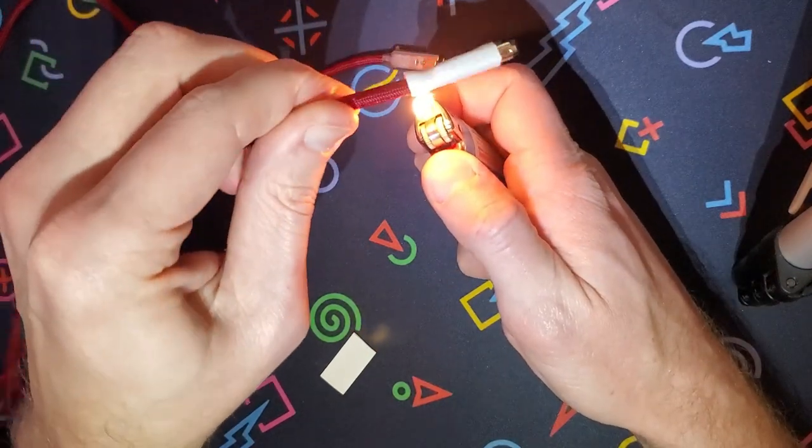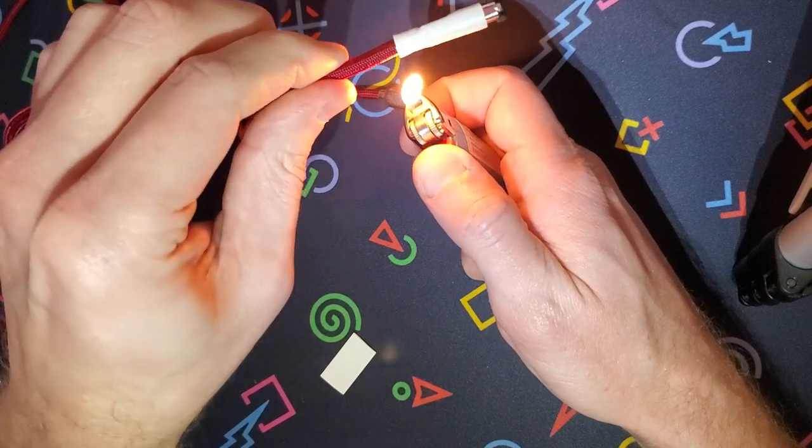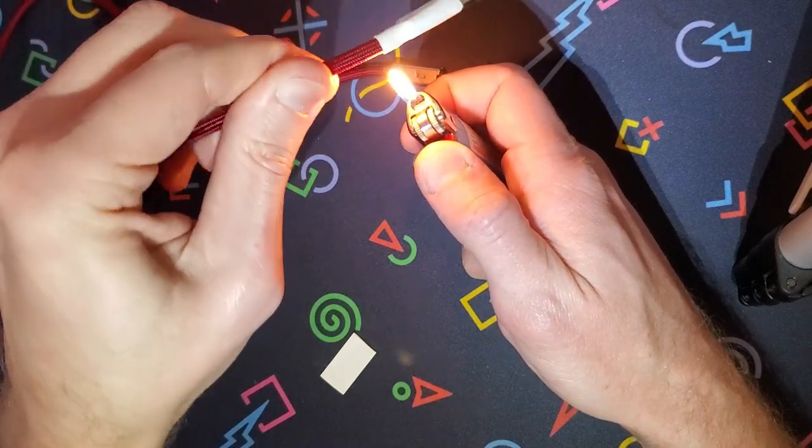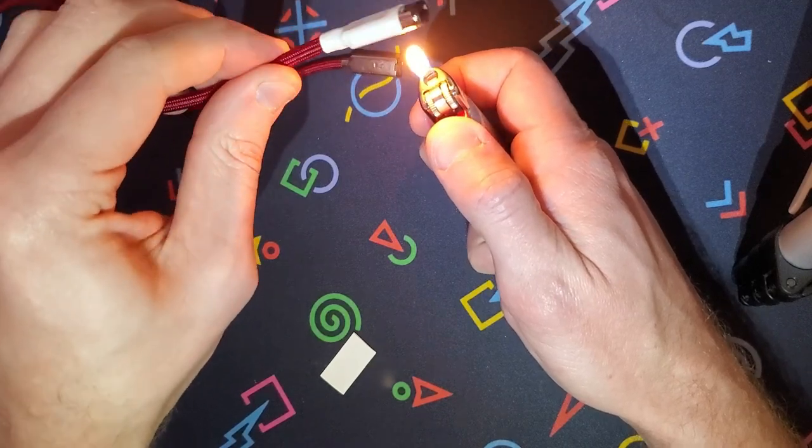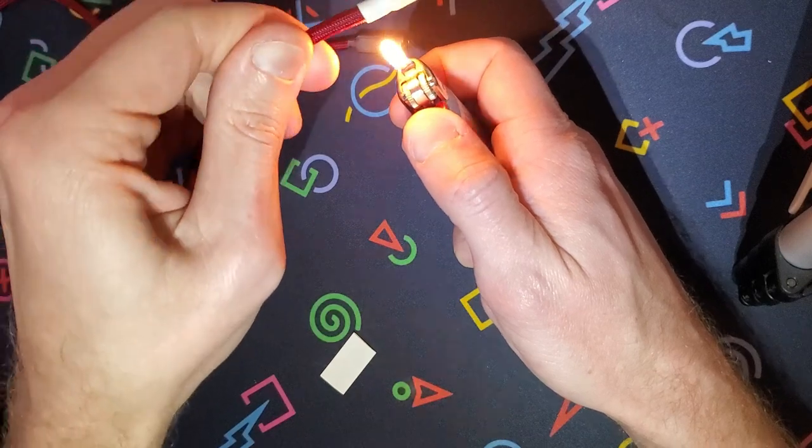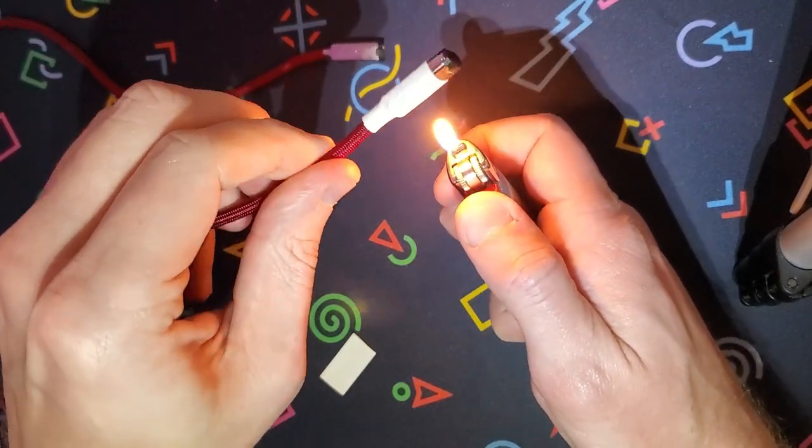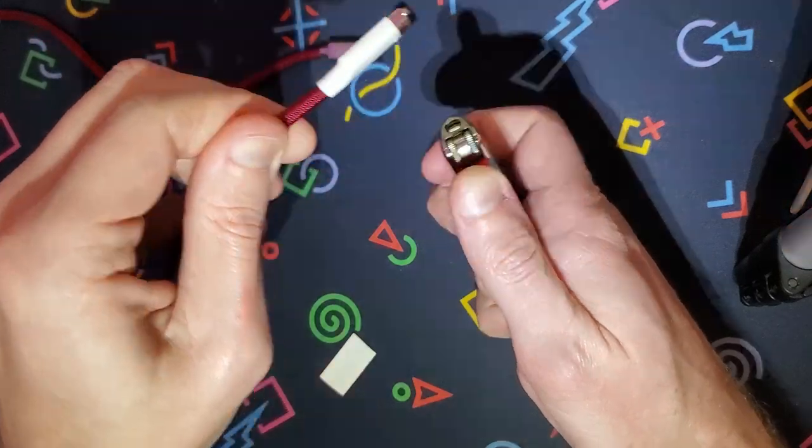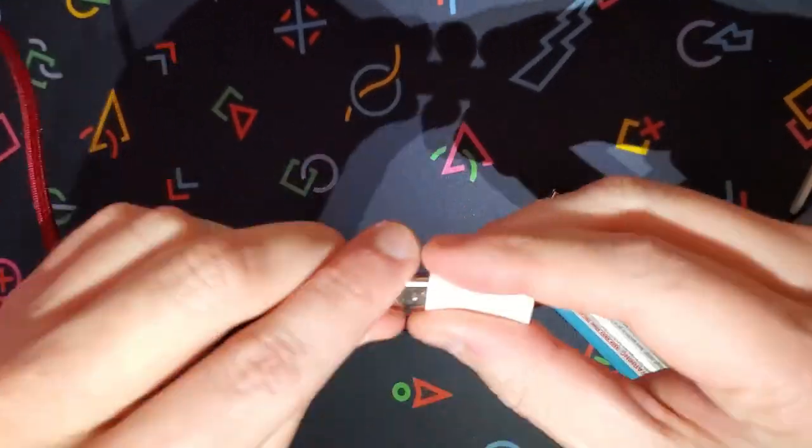When you're doing this, you want to be a bit careful. Don't get the plastic tip too hot because it will melt. And that can definitely affect the cable and its ability to function correctly. So just be a bit careful with this part. Maybe if you have a heat gun that might work better than a lighter just because it'll be less specific areas.